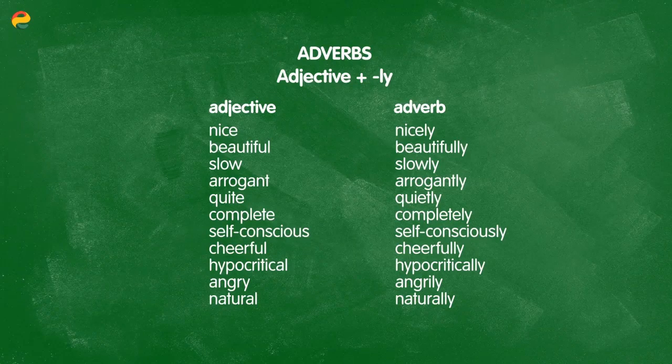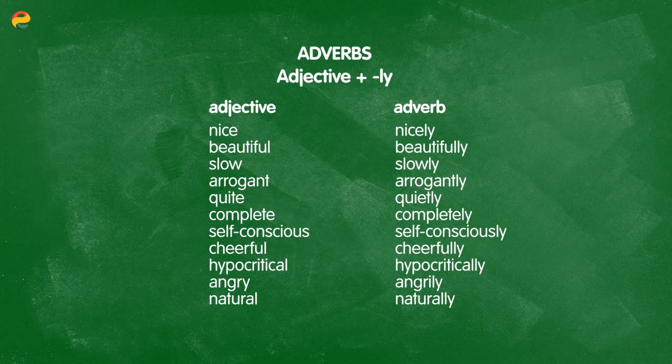So, if we want to talk about adverbs, first we should admit that most adverbs in English end in -ly. You can very often make the adverb form of a word by simply adding -ly to the adjective. For example: the adjective 'nice' becomes the adverb 'nicely'; beautiful, beautifully; slow, slowly; arrogant, arrogantly.